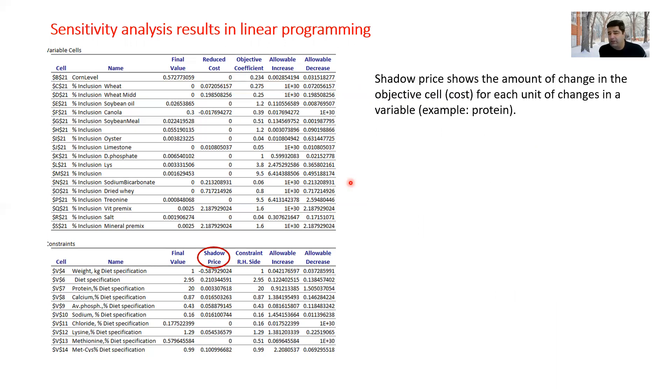The last term I'm going to show you is shadow price. Shadow price shows the amount of change in the objective cell, which was cost in our example, for each unit of changes in variable. For example, protein.